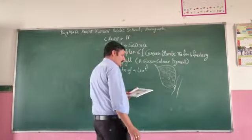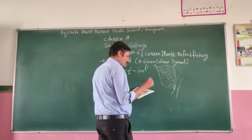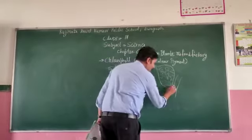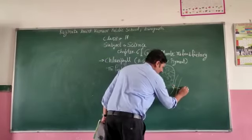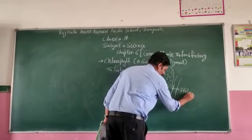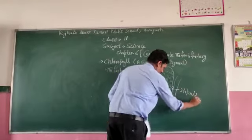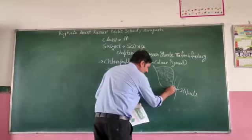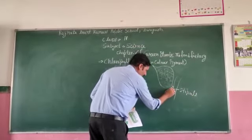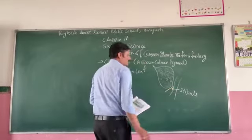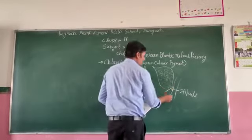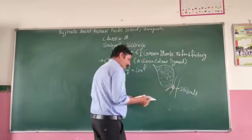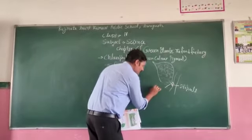The leaf is connected to the branch. The greenish stalk where the leaf connects to the branch is called the petiole.